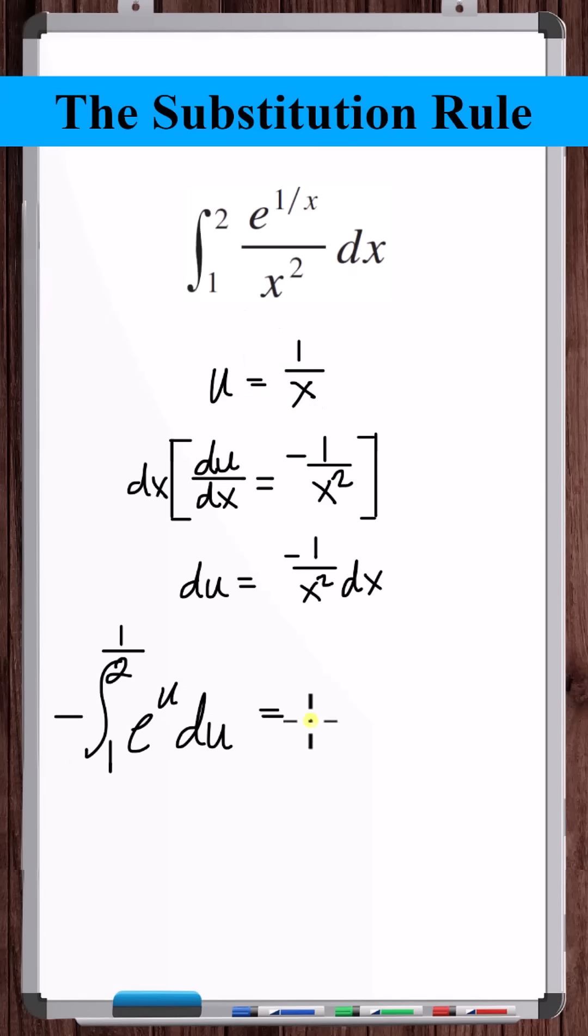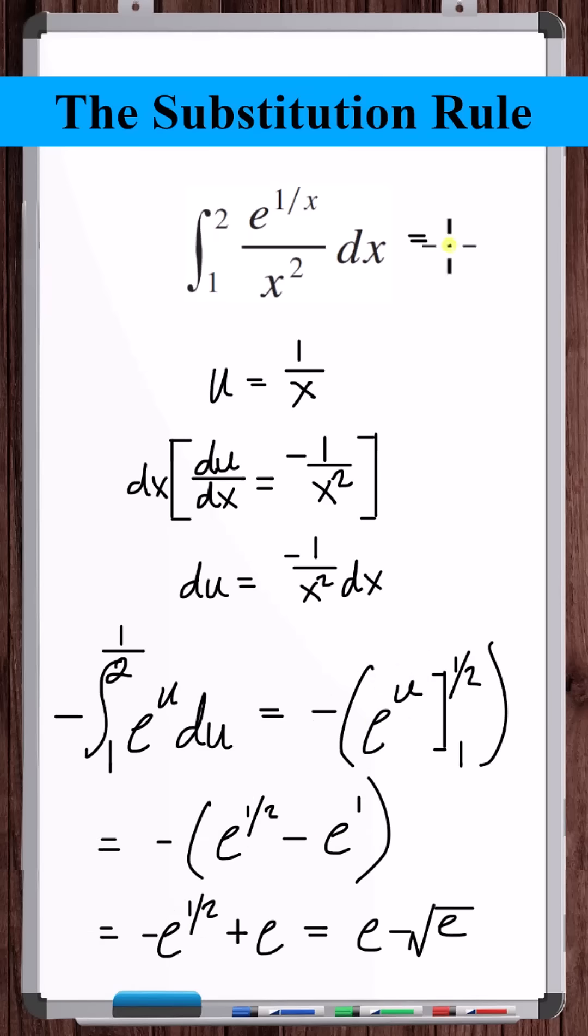Now let's evaluate this definite integral. The derivative of e to the u is just e to the u. So this integral equals e minus root e.